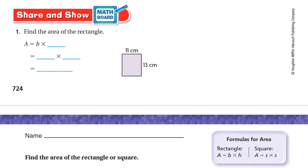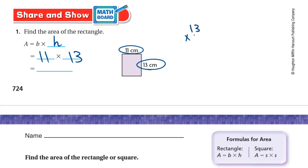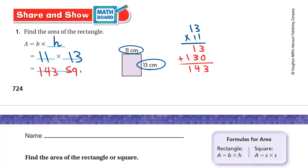Let's go to Share and Show. Find the area of the rectangle. The area of a rectangle is B times H — base times height. The base and height are 11 and 13, so I multiply 11 by 13. Multiplying 13 by 11: first, 1 times 3 is 3 and 1 times 1 is 1, giving 13. Then write 0, and multiply the other digit: 1 times 3 is 3 and 1 times 1 is 1, giving 130. Adding: 3, 1 plus 3 is 4, then 1 — so it's 143 square centimeters.